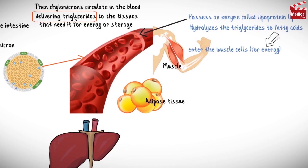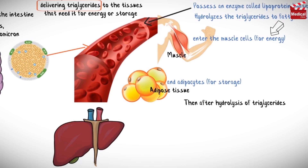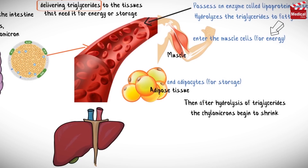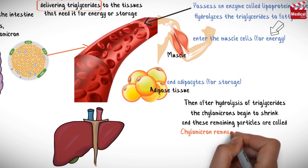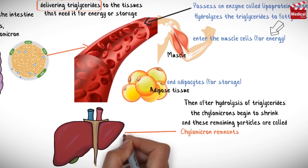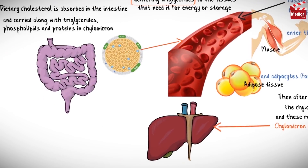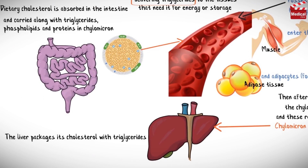After hydrolysis of triglycerides, the chylomicrons begin to shrink and these remaining particles are called chylomicron remnants. Then they end up in the liver. The liver packages its cholesterol with triglycerides into particles of very low density lipoproteins, VLDL.